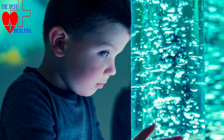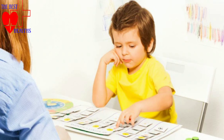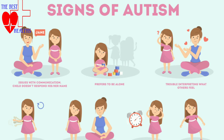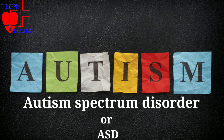In autism, the child has social and communication problems which persist throughout life. It starts at the age of 2 to 3 years, but it can be diagnosed at the age of 18 months also. It has a wide range of symptoms, so it is called Autism Spectrum Disorder or ASD.